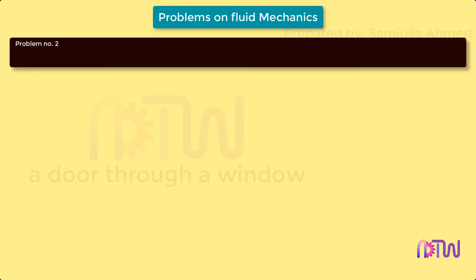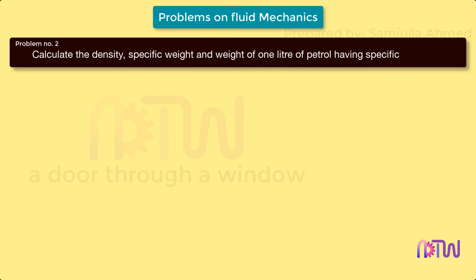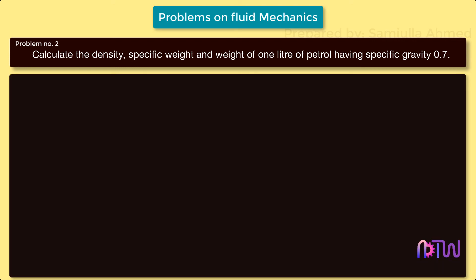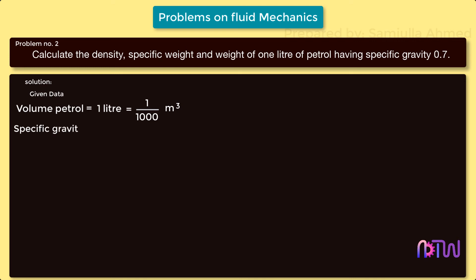Problem Number 2: calculate the density, specific weight, and weight of one liter of petrol having specific gravity 0.7. Given data: volume of petrol is 1 liter, equal to 1/1000 cubic meters, and specific gravity is 0.7.